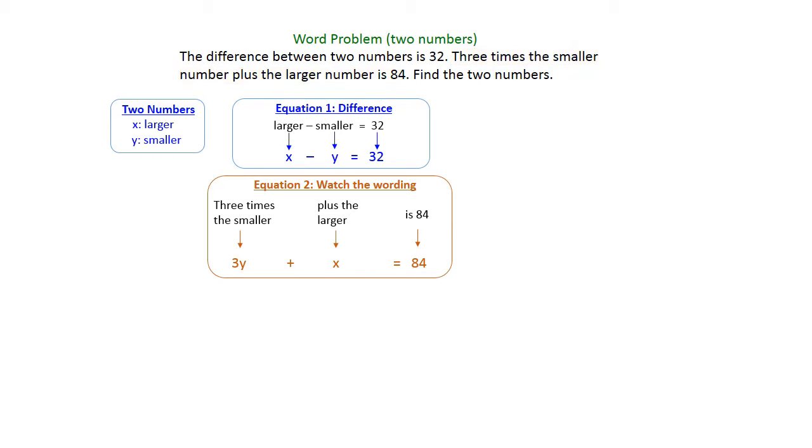We now have a system of equations. x minus y is 32, and 3y plus x equals 84. And at this point, you might want to line up the variables so that you can do addition method to solve.